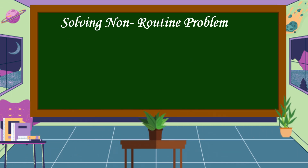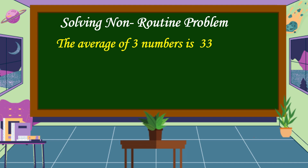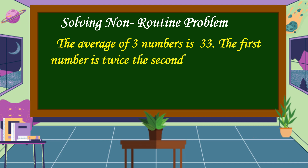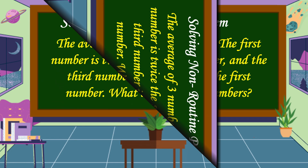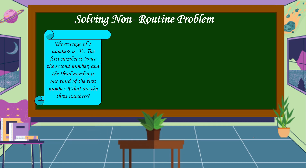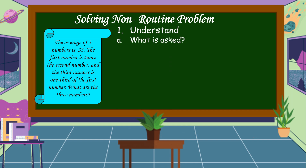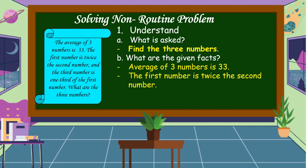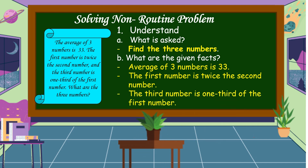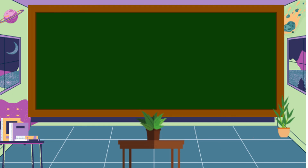Next, let's solve a non-routine problem. The average of three numbers is 33. The first number is twice the second number, and the third number is one third of the first number. What are the three numbers? Using the four-step plan, we first understand the problem: we need to find the three numbers. The given facts are the average is 33, the first number is twice the second, and the third is one third of the first.